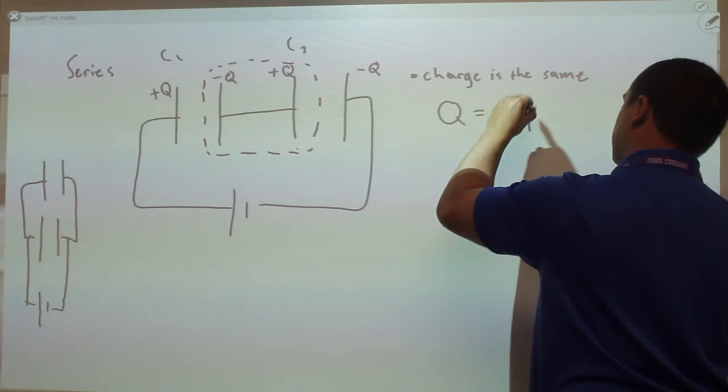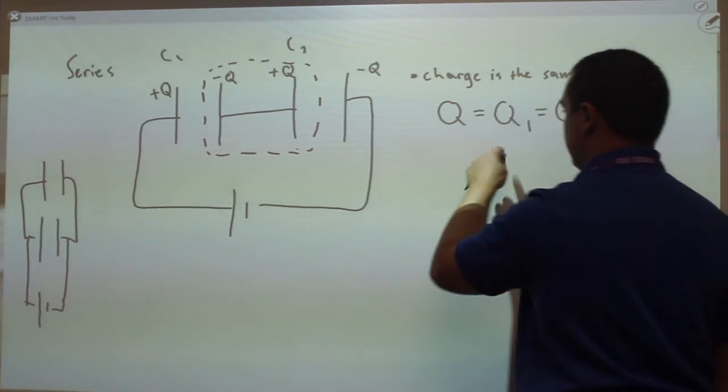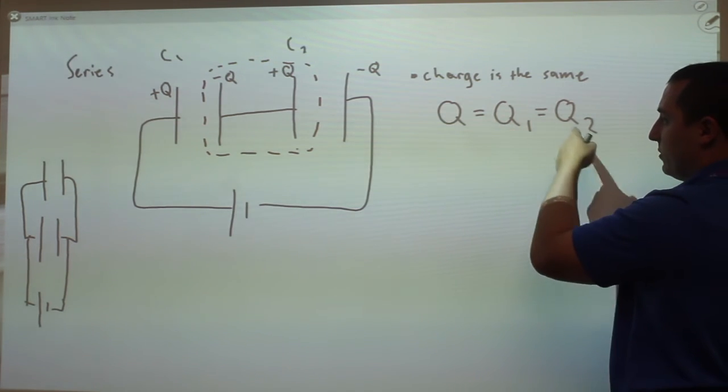So the charge that gets drawn off the battery, the total Q, is the same as the charge on 1 and 2.